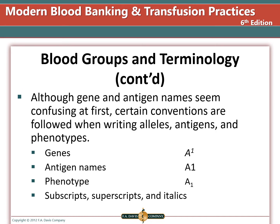Although gene and antigen names seem confusing at first, certain conventions are followed when writing alleles, antigens, and phenotypes. Genes are written in italics or underlined, and when handwriting, the allele number or letter is always superscript. Antigen names are written in regular type without italics or underlining. Some antigens have numbers or subscript letters. A phenotype describes which antigens are present on an individual's red blood cells and indicates the results of serological tests. It is important to use superscripts, subscripts, and italics appropriately.